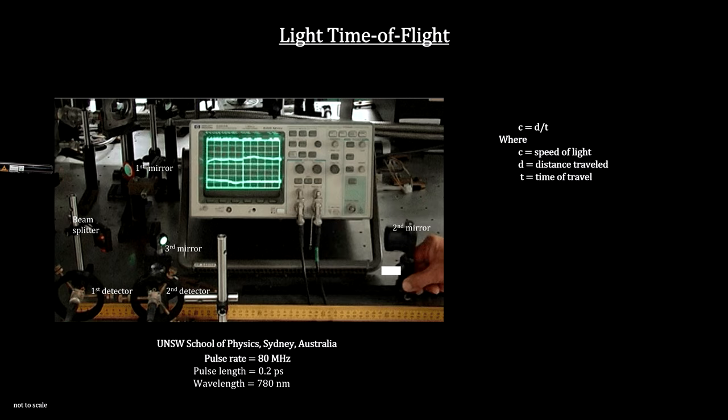Here's a typical lab experiment. A high-speed pulsed laser produces a regular series of very short pulses. The red lines show the beam path.